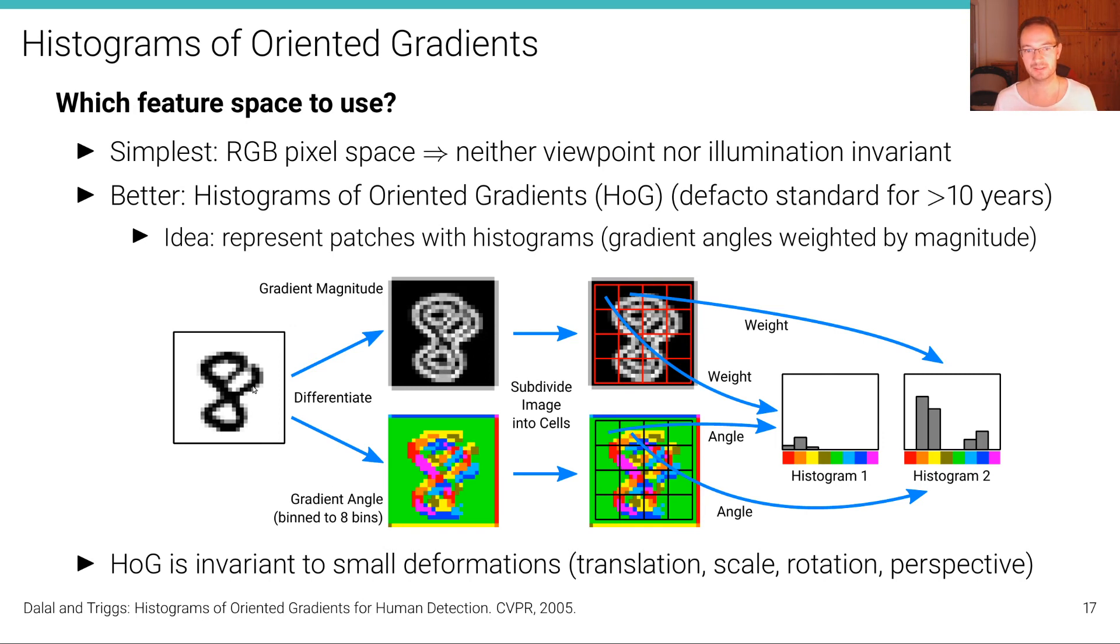And another advantage is also that it is becoming independent of the brightness, the absolute brightness, as we are computing these histograms based only on the gradients and not on the original intensity information. So these are the two aspects that led to the success of histogram of oriented gradients. They capture relevant information, they are capturing the orientation of edges, but they are a little bit flexible in terms of translation, scale and rotation. And they are invariant to brightness changes, for example, if you change the gain or the shutter of your camera.